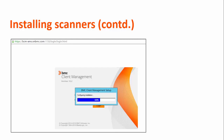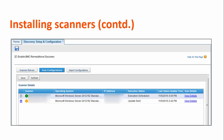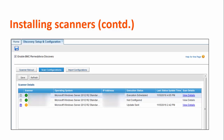After the installer is downloaded on the device, double-click the installer and run the installation. Now navigate back to the RemedyForce Administration, Configure CMDB 2.0, Discovery Setup and Configuration page. Click the Scan Configurations tab and then click Refresh. The scanner you just installed is shown in the scanner details list.